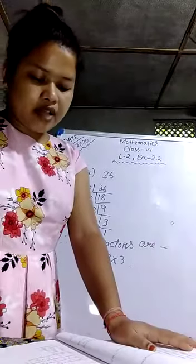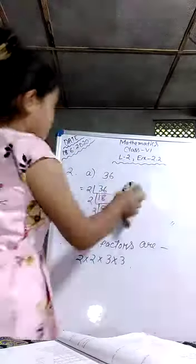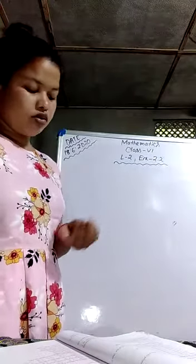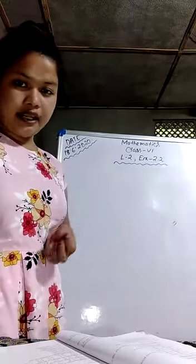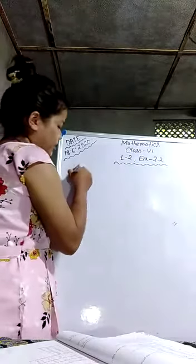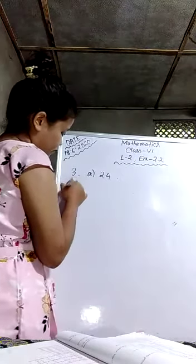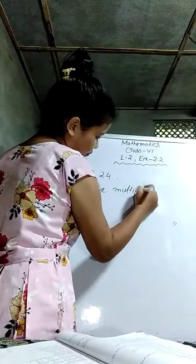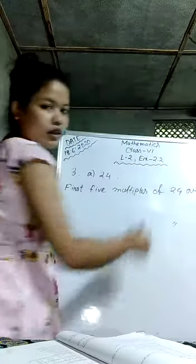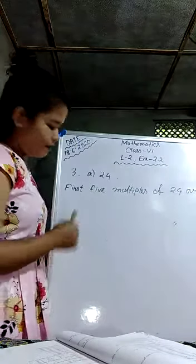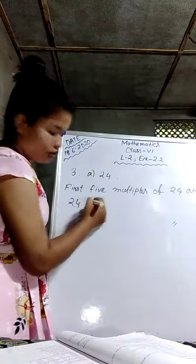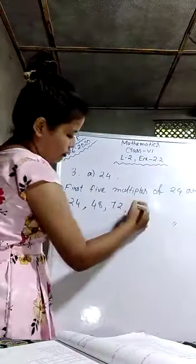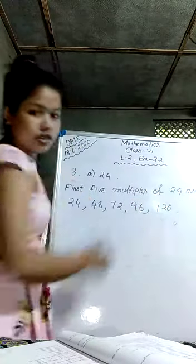Question number 3: find the first 5 multiples of the following. You have to find the first 5 multiples. For example, the first 5 multiples of 2 are 2, 4, 6, 8, 10 — these are called multiples. For question number 3, the first 5 multiples of 24 are: 24 × 1 = 24, 24 × 2 = 48, 24 × 3 = 72, 24 × 4 = 96, 24 × 5 = 120.